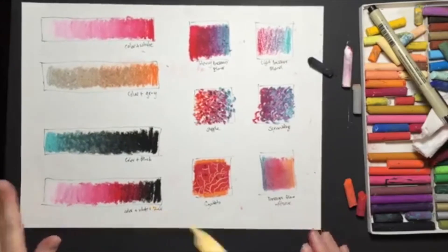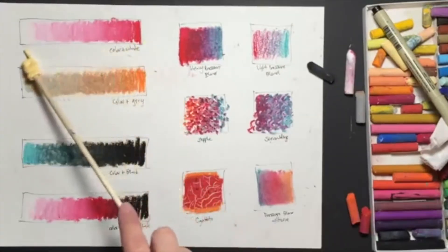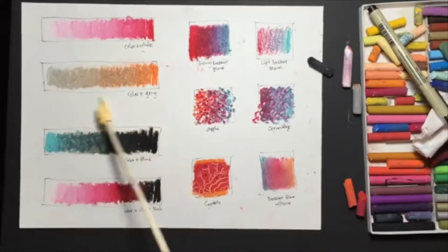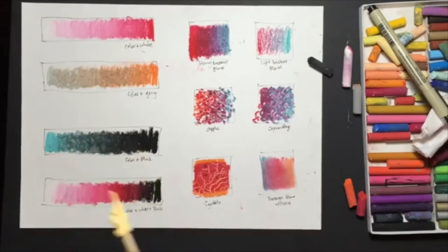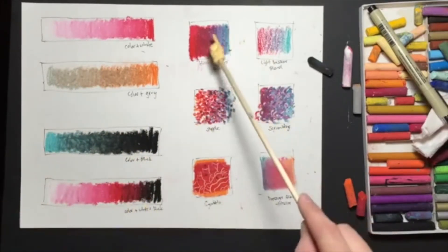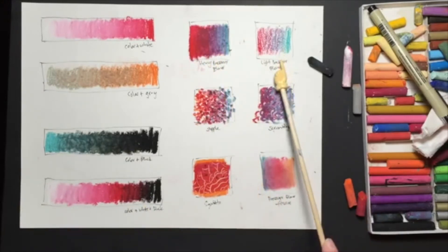Let's go over the different techniques we just learned. So we have color plus white, and this is a heavy pressure blend. Color plus gray, color blended into black. A color blended into black and white, the whole range of values. This is a heavy pressure blend, a light pressure blend, stipple, scrumbling, sgraffito, and a pressure blend.